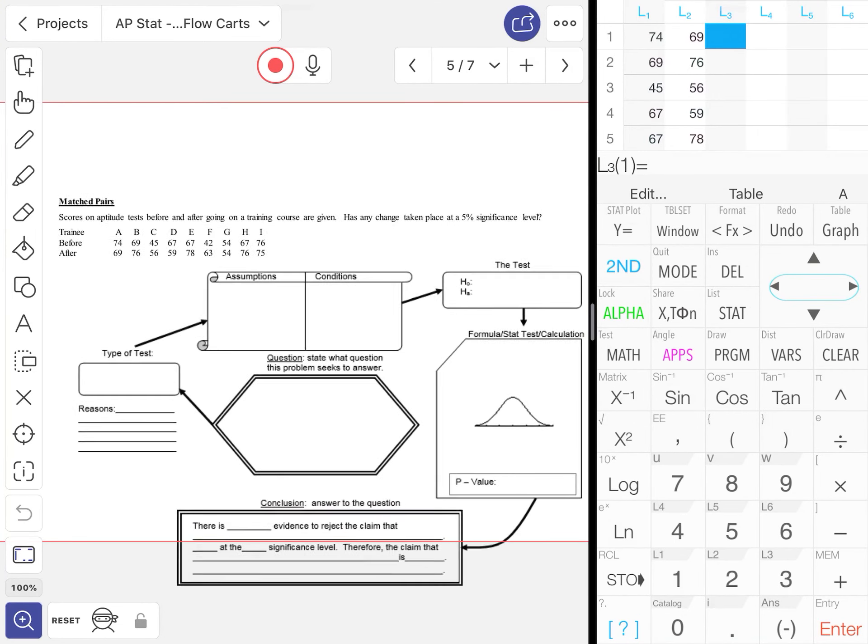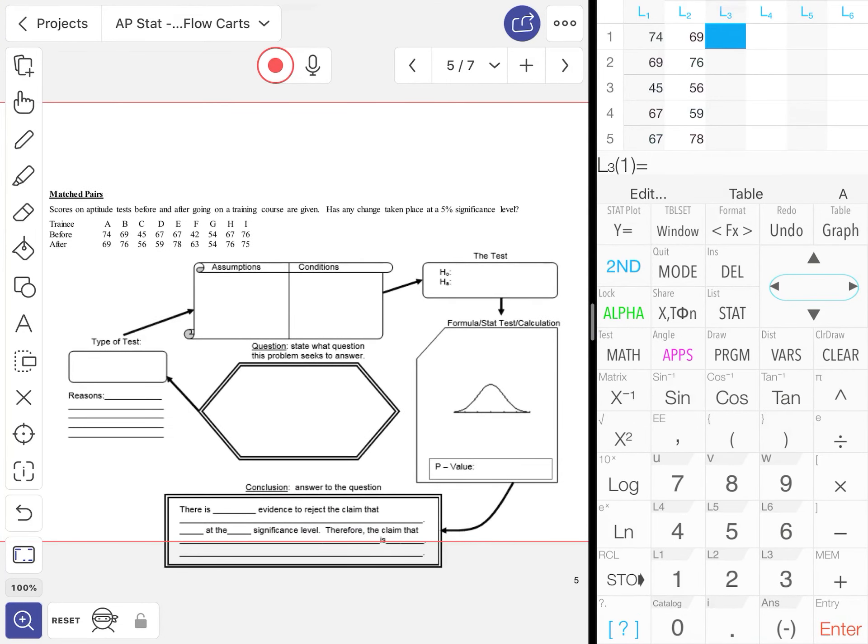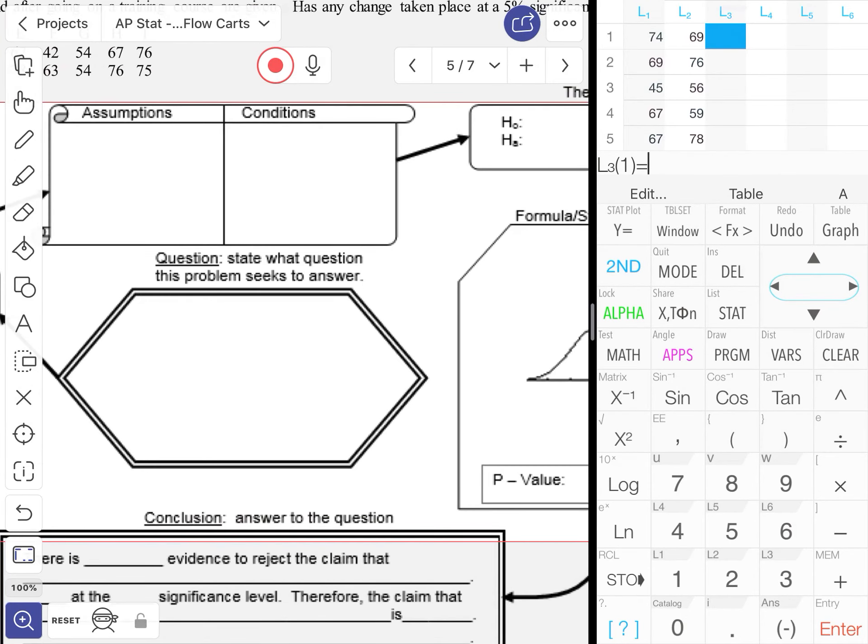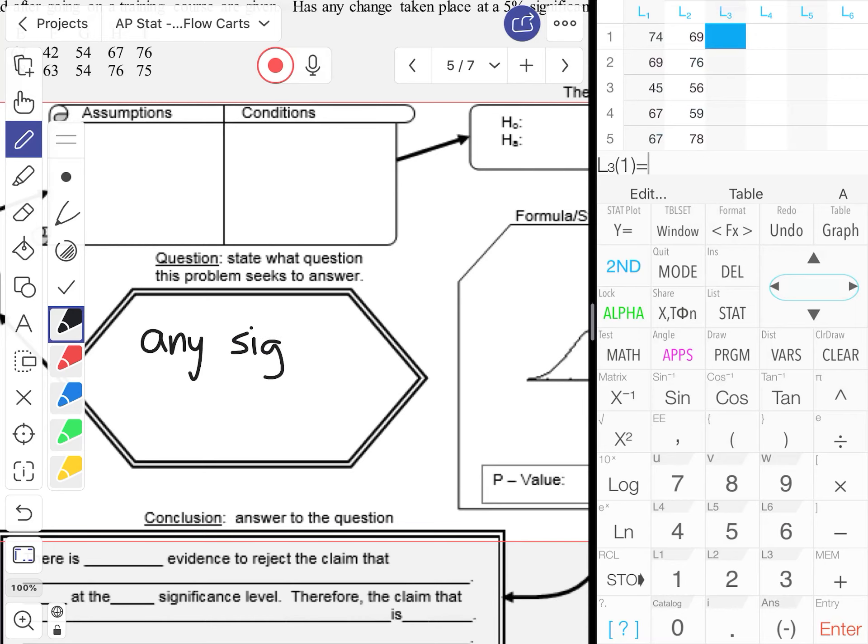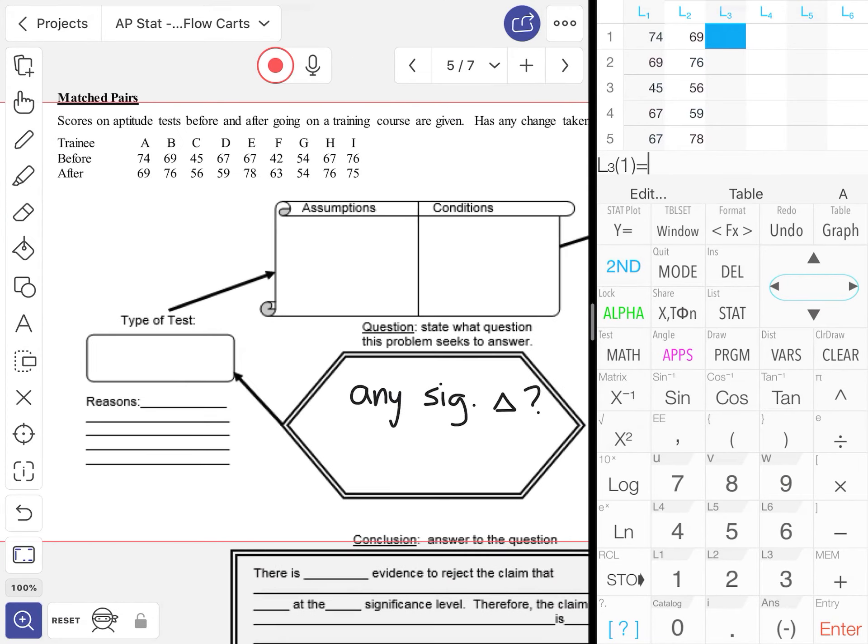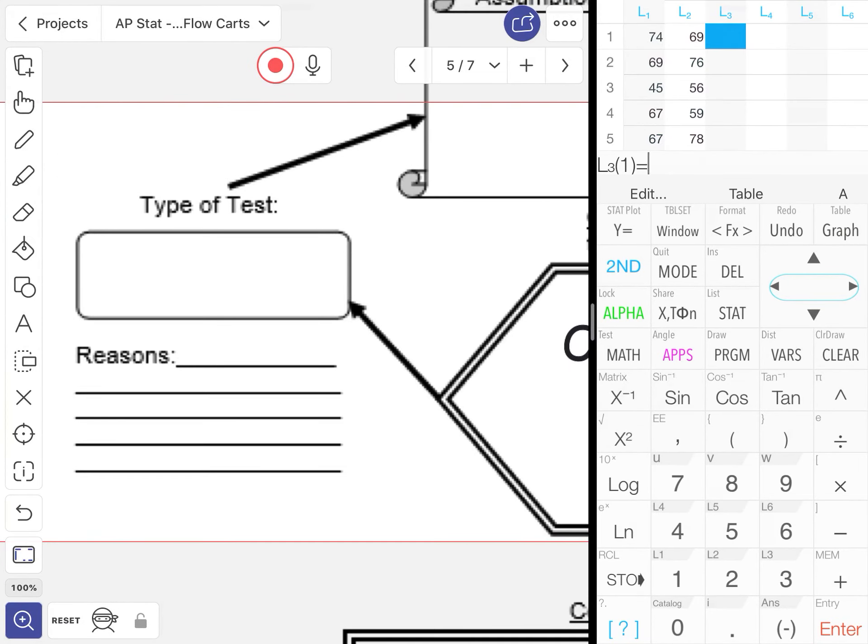Okay, so this hypothesis test is related to aptitude tests before and after going on a training course, and we want to know if any change is taking place at the 5% level. I'll paraphrase that by saying any significant change.